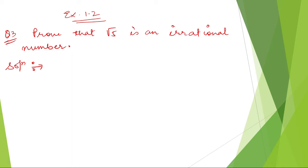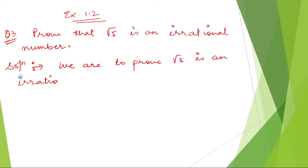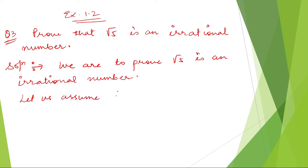So, how are we going to prove? We are to prove root 5 is an irrational number. The conditions to prove are similar to the previous question, question number 2. Since root 5 is an irrational number, we need to prove it. Let us assume that root 5 is a rational number.